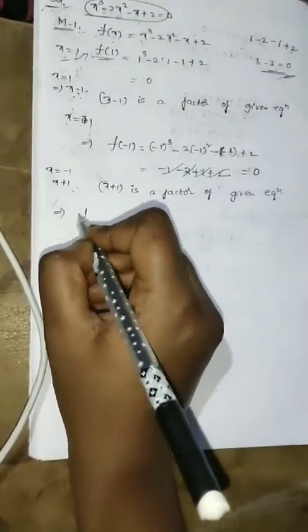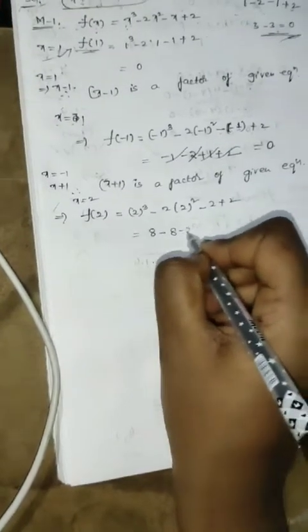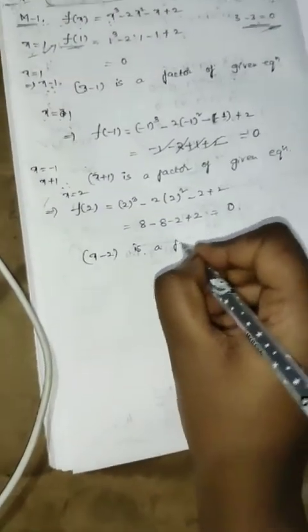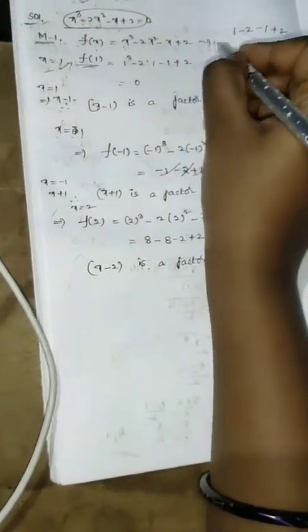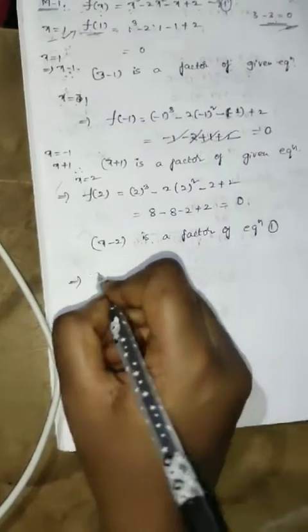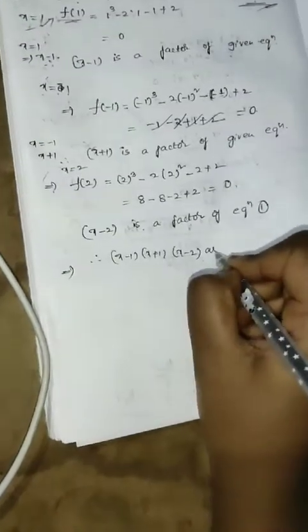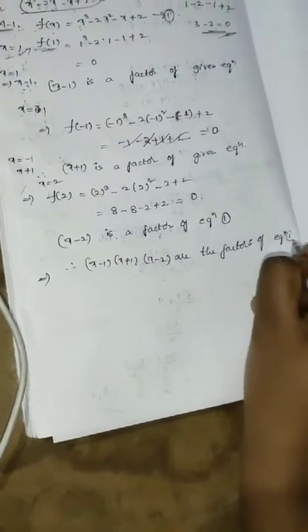Similarly, substituting f of 2: 2 cubed minus 2 into 2 squared minus 2 plus 2 equals 8 minus 8 minus 2 plus 2, which equals 0. Therefore x minus 2 is a factor of the equation. So x minus 1, x plus 1, and x minus 2 are all factors of the given cubic equation.